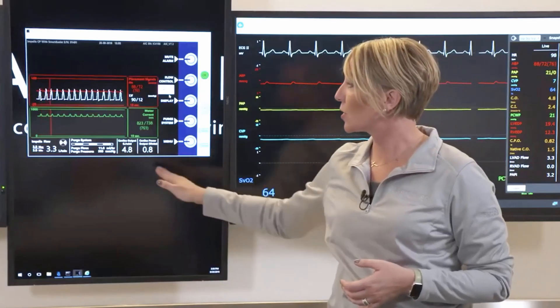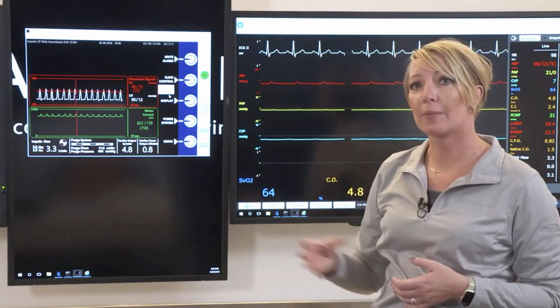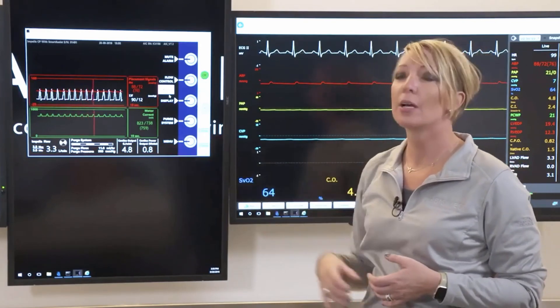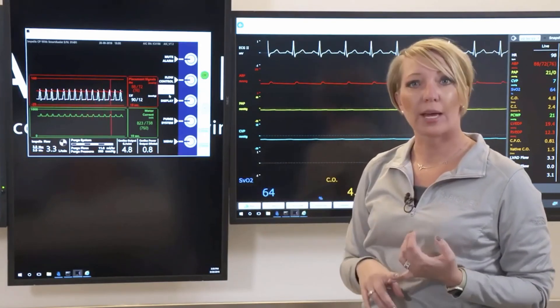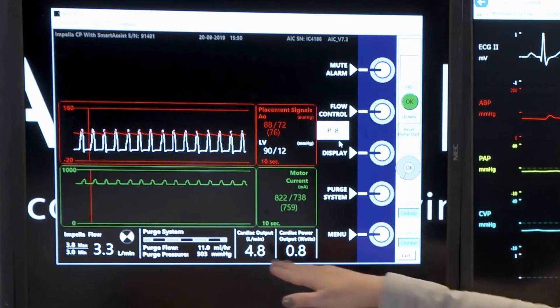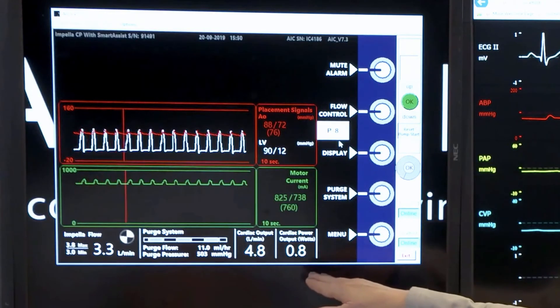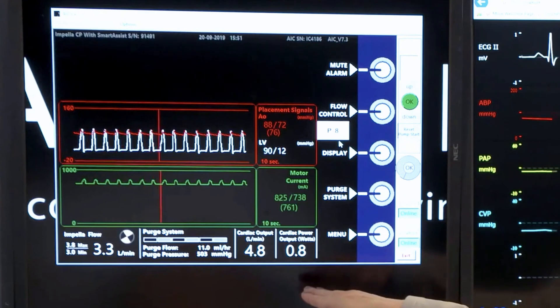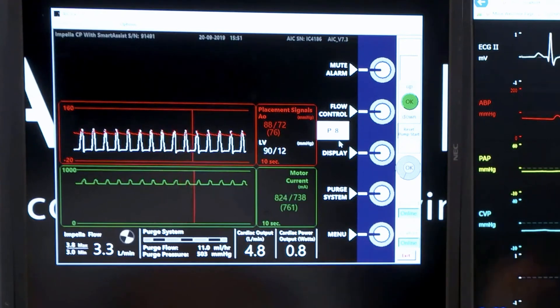On the far right hand of that common screen, we will have the additional metrics. That's going to be inputting the cardiac output, and then the AIC will automatically calculate the CPO to allow for trending of that CPO.